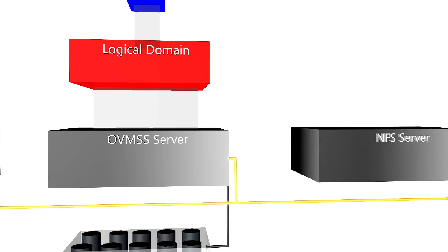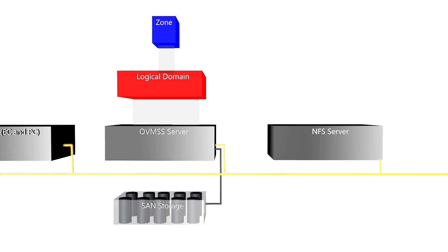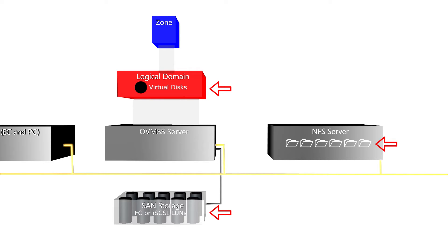For storage, you'll need to consider how you want to store the operating system and metadata for both the logical domain and the non-global zone. For the operating systems, you can use network attached storage, also known as NAS, static or dynamic SAN storage, which are fiber channel or iSCSI LUN disks, virtual disks exported from another service domain, which are referred to as local devices in the Ops Center interface, and the local file system.